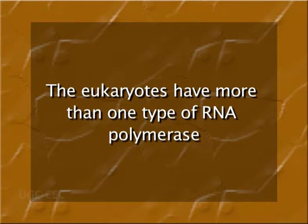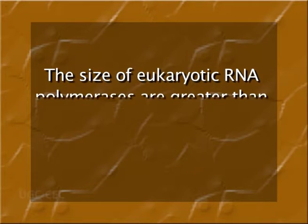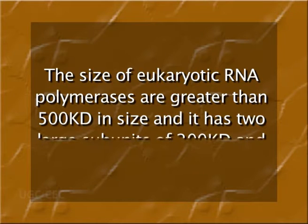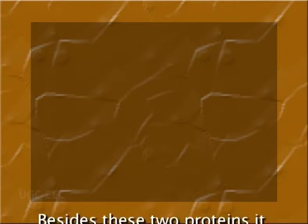Now let us discuss transcription in eukaryotes. Eukaryotes have more than one type of RNA polymerase. Based on the activity towards alpha-amanitin, an antibiotic which inhibits mRNA synthesis, three classes of RNA polymerase have been identified, involved in transcription of different classes of eukaryotic genes. The size of eukaryotic RNA polymerases is greater than 500 kD; it has two large subunits of 200 kD and 140 kD. The 200 kD subunit is similar to the beta-dash subunit of E. coli RNA polymerase and has a similar function of template binding.